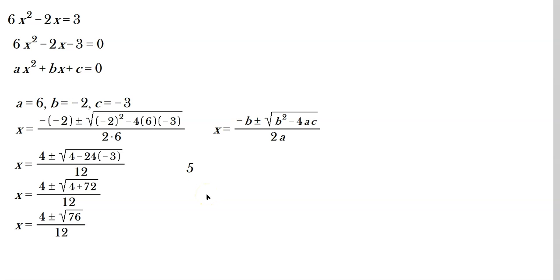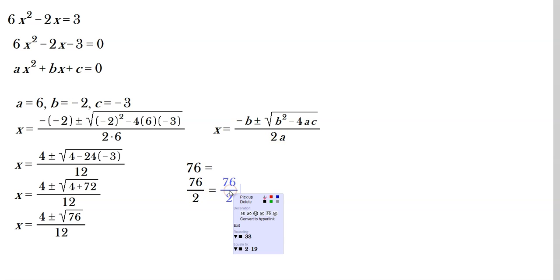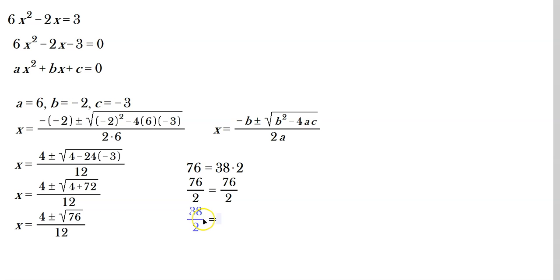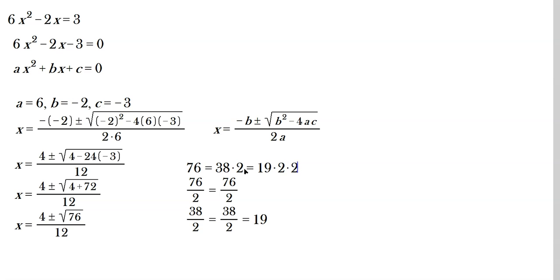Let's break down 76 to simplify. Divide 76 by 2 to get 38; then 38 divided by 2 is 19. So 76 equals 19 times 2 times 2, which means you can write 76 as 19 times 4. So x equals 2 plus or minus the square root of 4 times 19, with a perfect square under the radical, all over 12.